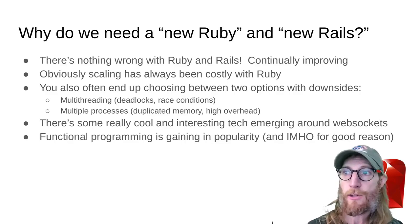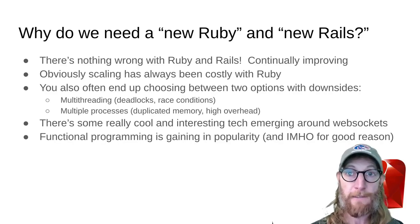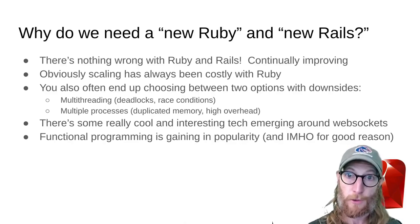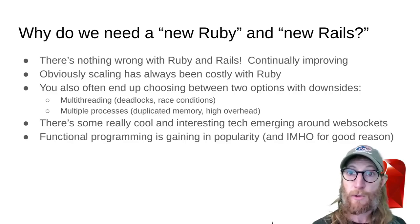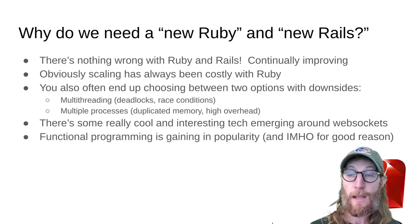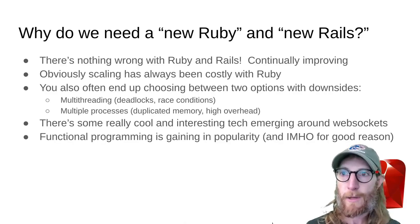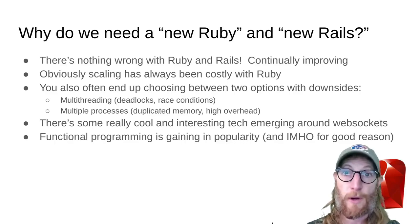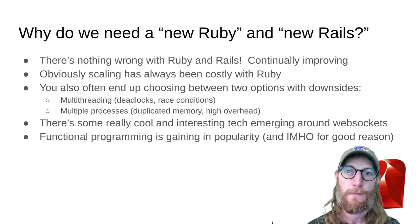There's also some really cool and interesting tech emerging around WebSockets. Rails is catching up on this, but when I first put this together, LiveView was very new, and LiveView was, in my opinion, quite a revolutionary approach to how we do web applications. There's some really cool stuff that's emerging. Also, functional programming is gaining in popularity, and in my opinion for good reason. Elixir has better support for it — it's a much more functional-style programming language.